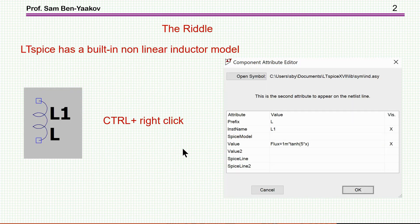Earlier, I posted a riddle that goes like this. In LTSpice, there is a possibility to make an inductor current dependent. To do that, you point on it, then control plus right click, you'll get this window which is the attribute editor and then you have this equation that you put in.